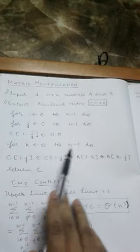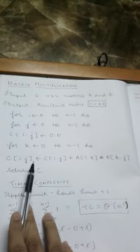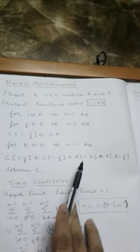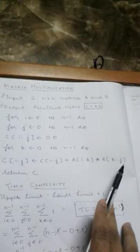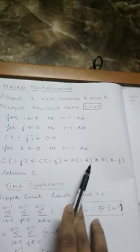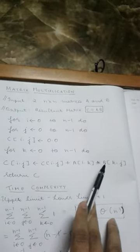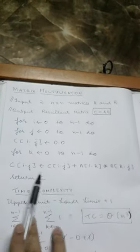For k varying from 0 to n minus 1, we have C of i dot j is assigned C of i dot j plus A of i dot k into B of k dot j, where k represents the number of columns of A as well as the number of rows of B. Finally, we return the resultant matrix C.